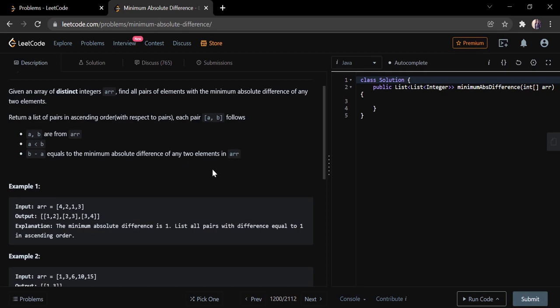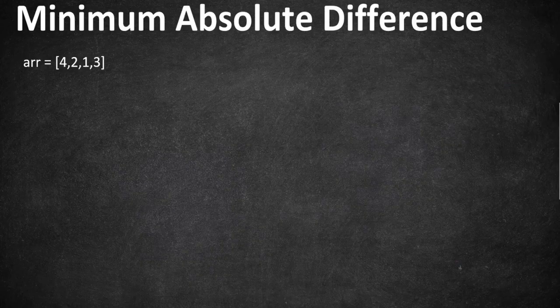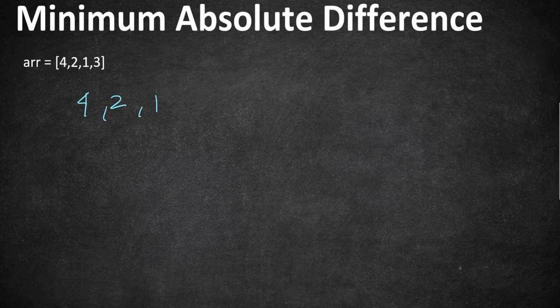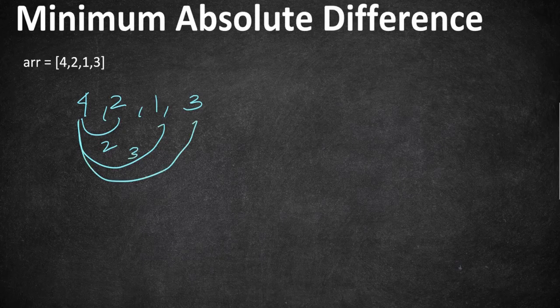Let's understand this with an example from the problem statement. The first thing we have to do is find the difference between all the pairs in the given array, find the minimum one, and return the list of pairs with that minimum absolute difference. Starting from four: the difference between four and two is two, four and one is three, and four and three is one. So the minimum difference so far is one.